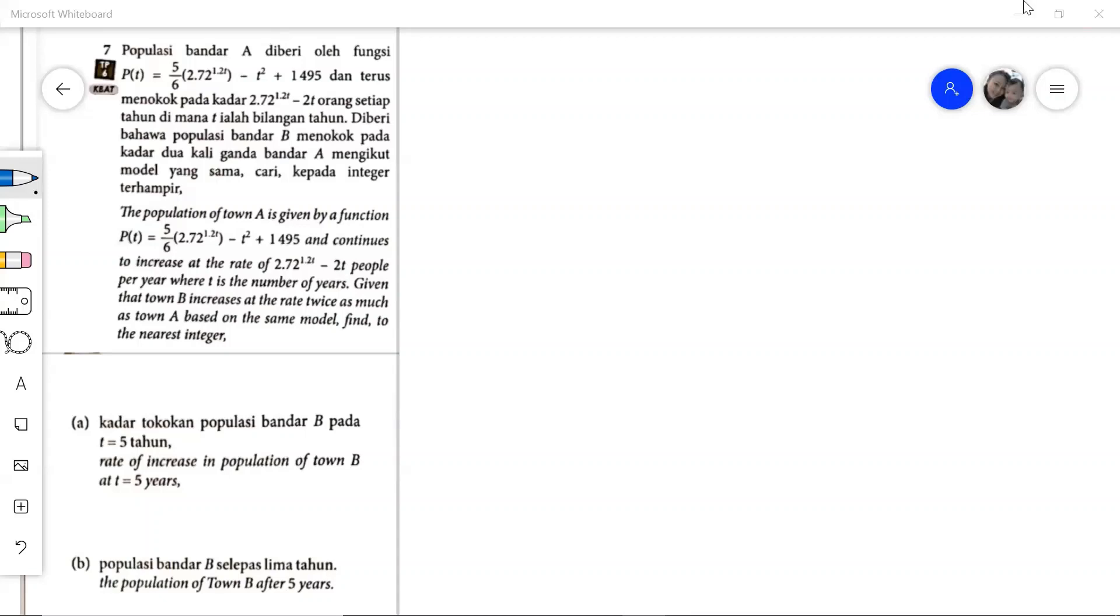In this question, the population of town A is given by a function P in terms of T, and it will continue to increase at the rate of this expression, whereby T is the number of years.